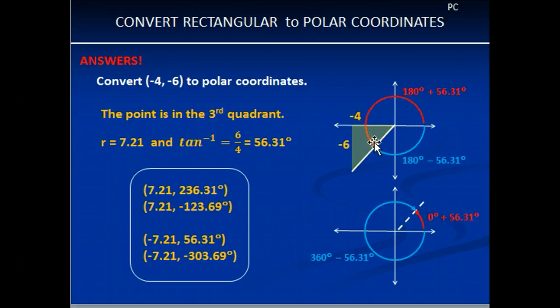Our positive angle is 180 plus theta, which is 56.31. Our negative is going to be 180 minus theta. And to find that, so our first two points are done right here, 7.21 and 236.31 degrees, and 7.21 and -123.69 degrees. Then we have to look at the second one.